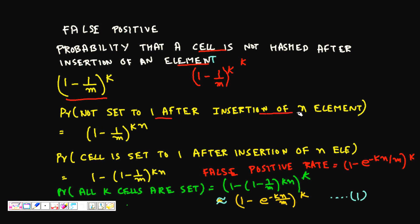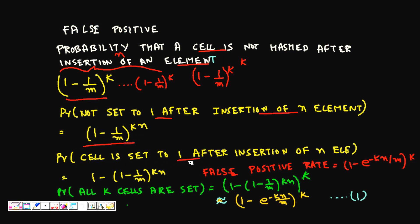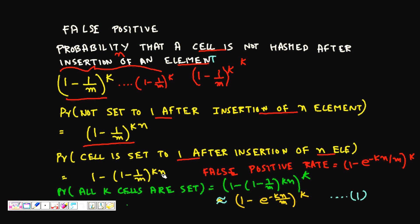So (1 - 1/m)^k is the probability that a cell is not set to 1 after insertion of one element. After inserting all n elements, this must happen n times, so the probability a cell remains 0 is (1 - 1/m)^(kn). Therefore, the probability that a cell IS set to 1 after n insertions is 1 - (1 - 1/m)^(kn).